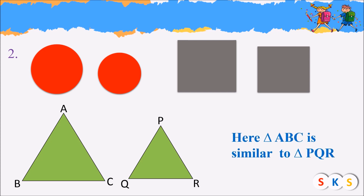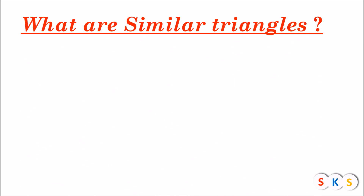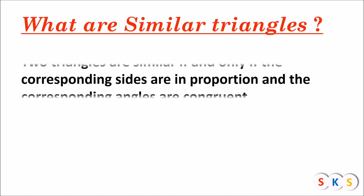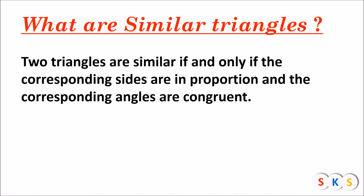Here we have two triangles which are unequal in size, so triangle ABC is similar to triangle PQR. What are similar triangles? Two triangles are similar if and only if the corresponding sides are in proportion and the corresponding angles are congruent.